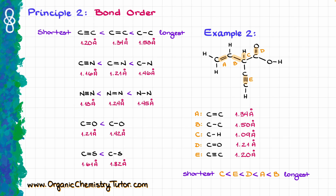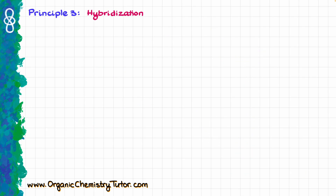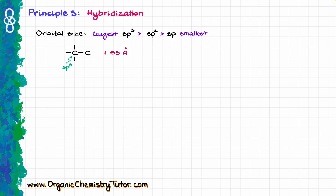Atomic size and bond order are the two major principles for bond length rankings. But there are two more aspects of molecular structure to consider. First, hybridization has some influence on bond length. The sp3 orbital is the largest, followed by sp2, and then sp, which is the smallest. This affects bond length: sp3 hybridized atoms make longer bonds than sp2 hybridized atoms, which are slightly shorter, and sp hybridized atoms make the shortest bonds — if everything else is the same. However, this is not as big a factor as atomic size or bond order, and the effect, while present, is not that drastic.